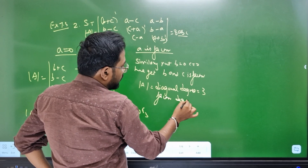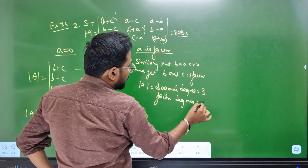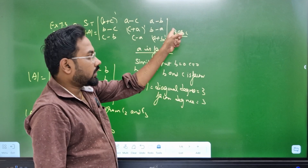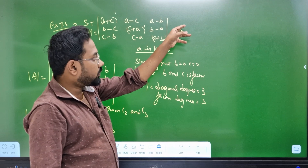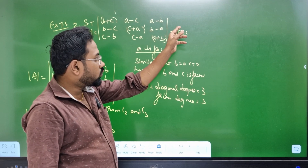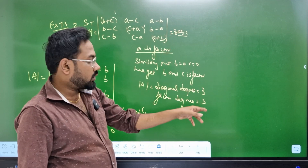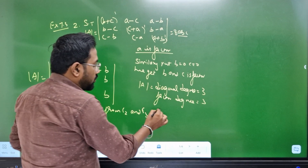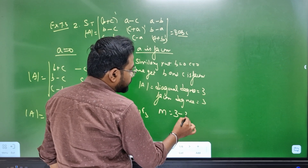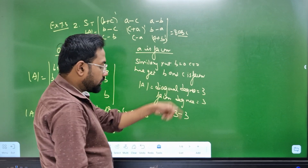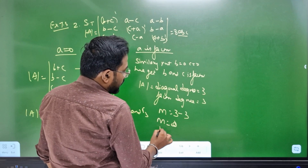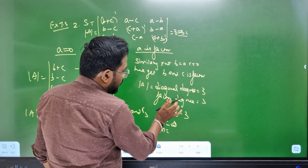Factor degree is 3. Look: 1, 2, 3 — look at the power. 3 and 3. M equal to 3, M equal to 3. 2 minus M equal to 0. So that means M equal to K.